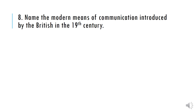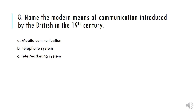Name the modern means of communication introduced by the British in the 19th century. A) Mobile Communication, B) Telephone System, C) Telemarketing System, D) Telegraph System. And the correct answer is Option D — Telegraph System.